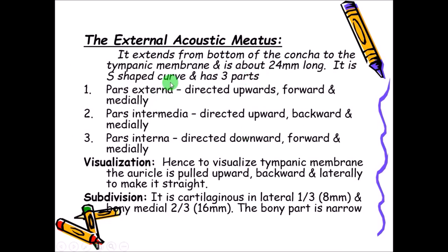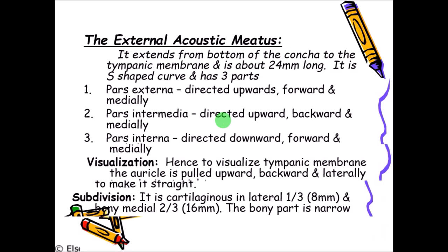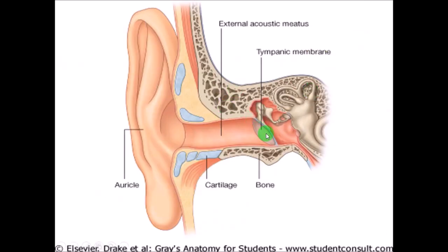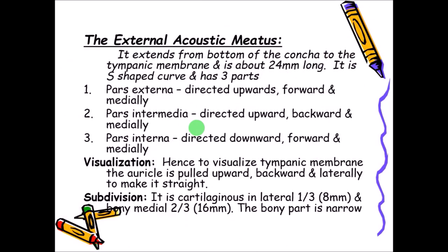The external acoustic meatus has three parts: pars externa, pars intermedia, and pars interna. Pars externa is directed upwards, forwards, and medially. Pars intermedia is directed upwards, backwards, and medially. Pars interna is directed downwards, forwards, and medially. This curvature can be appreciated when you use a torch to examine the tympanic membrane — you cannot see directly because it is S-shaped.